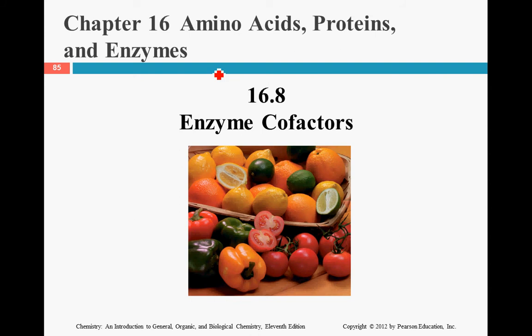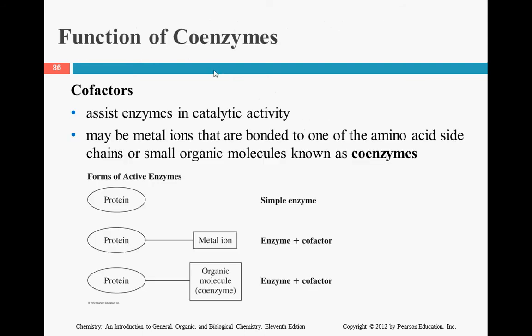The final section covers things that help enzymes do their jobs. These are called cofactors, also called coenzymes. They assist the enzymes in catalytic activity, speeding up the reaction itself. A metal ion, for instance, could bond to the protein of the enzyme and make it go a little faster.